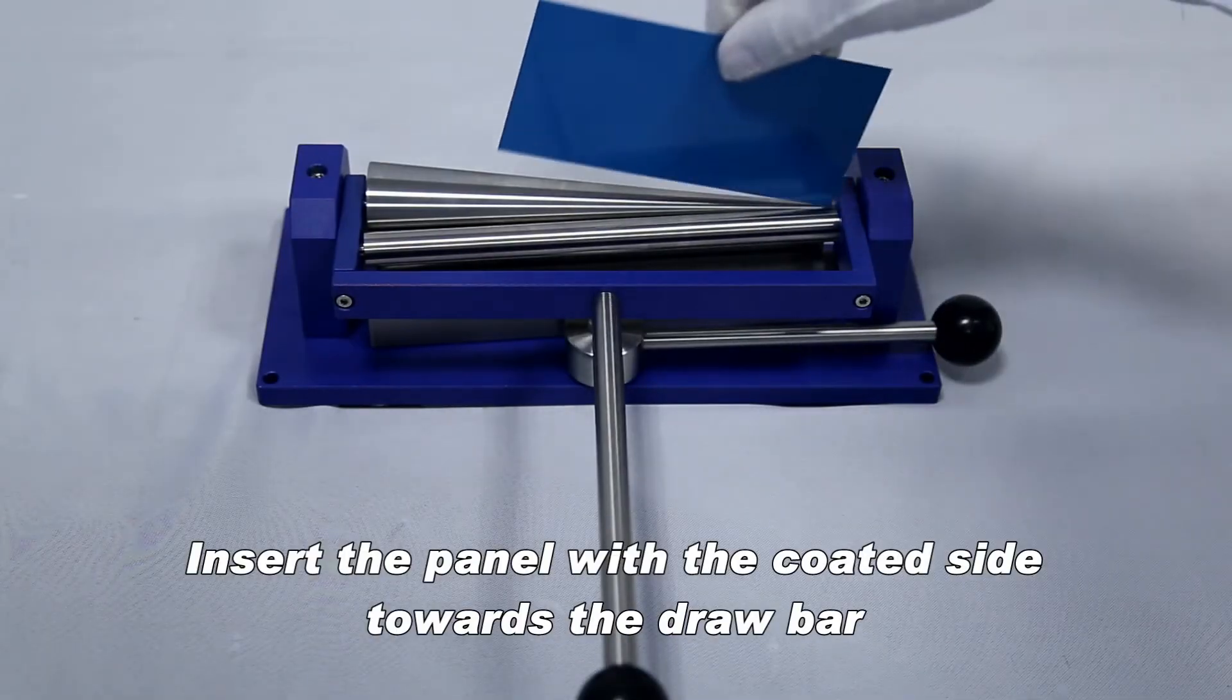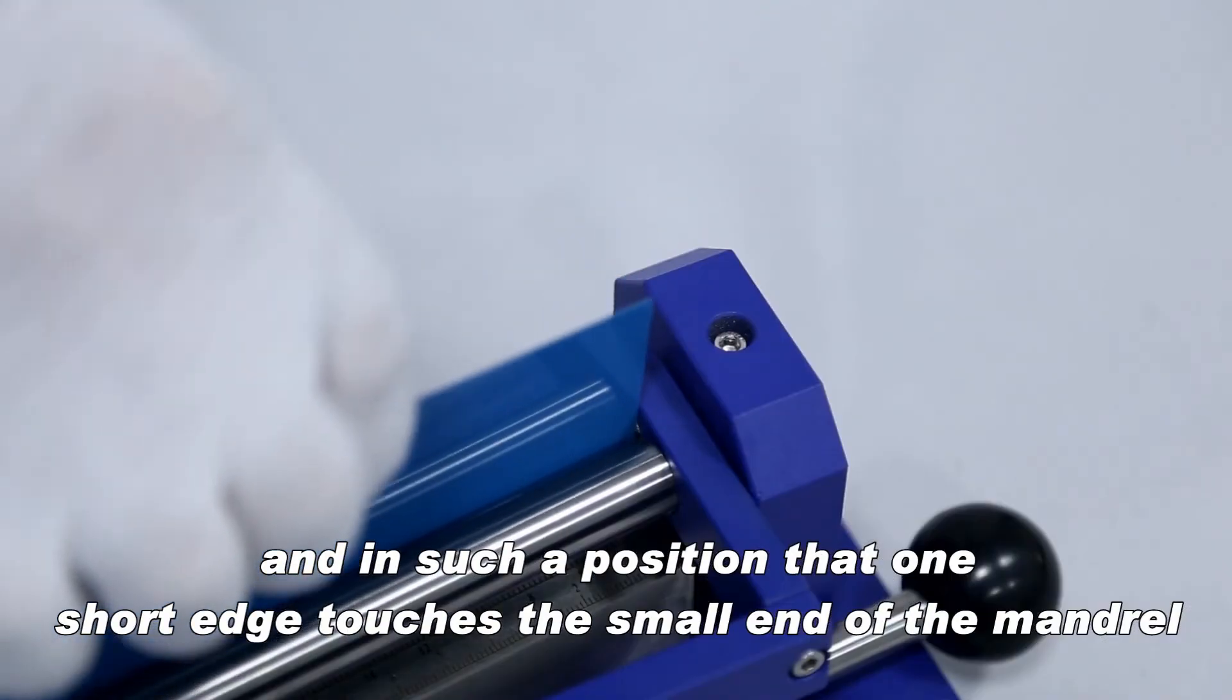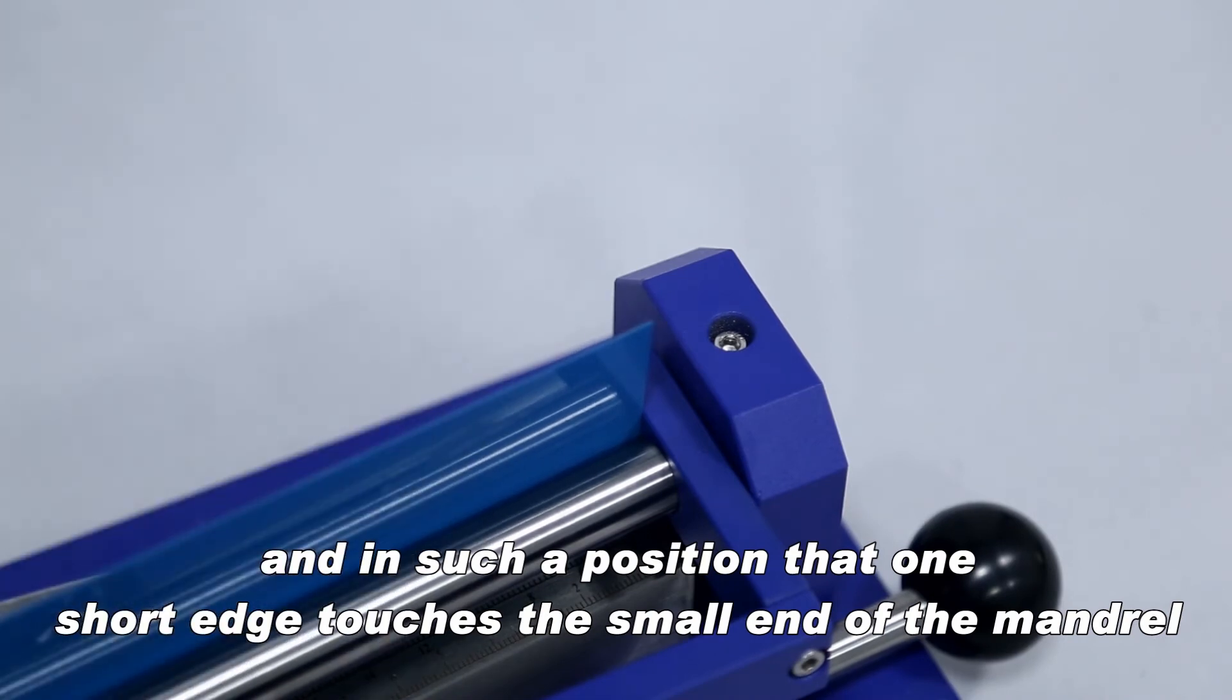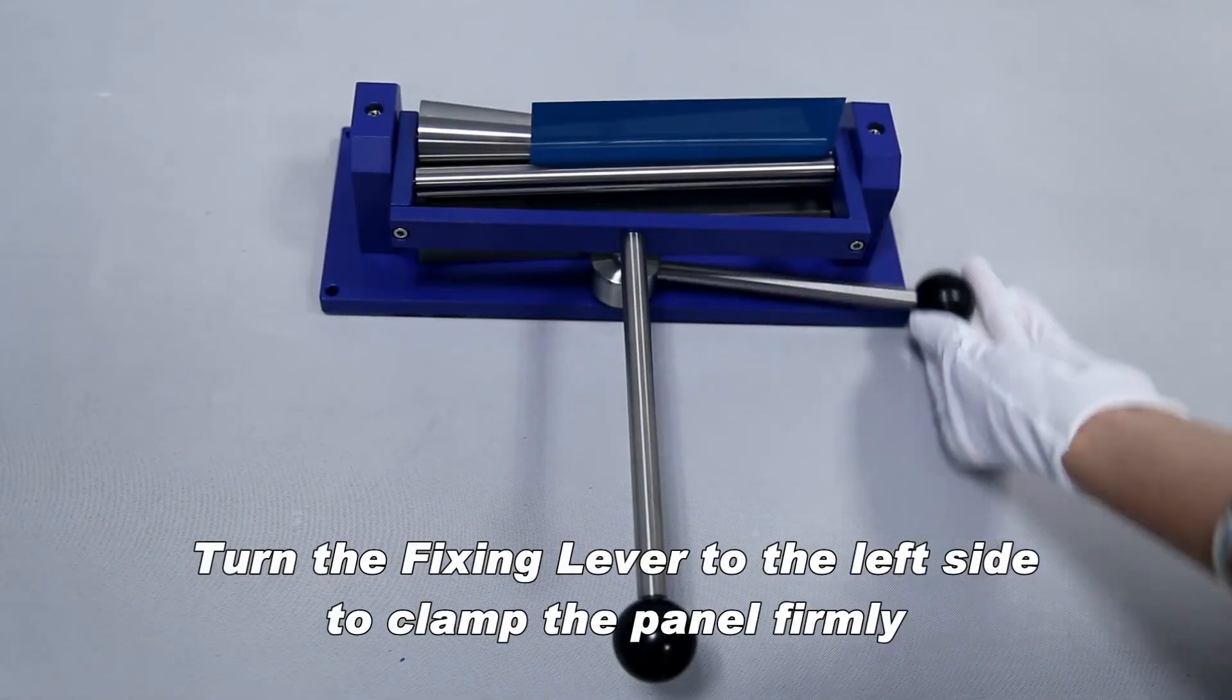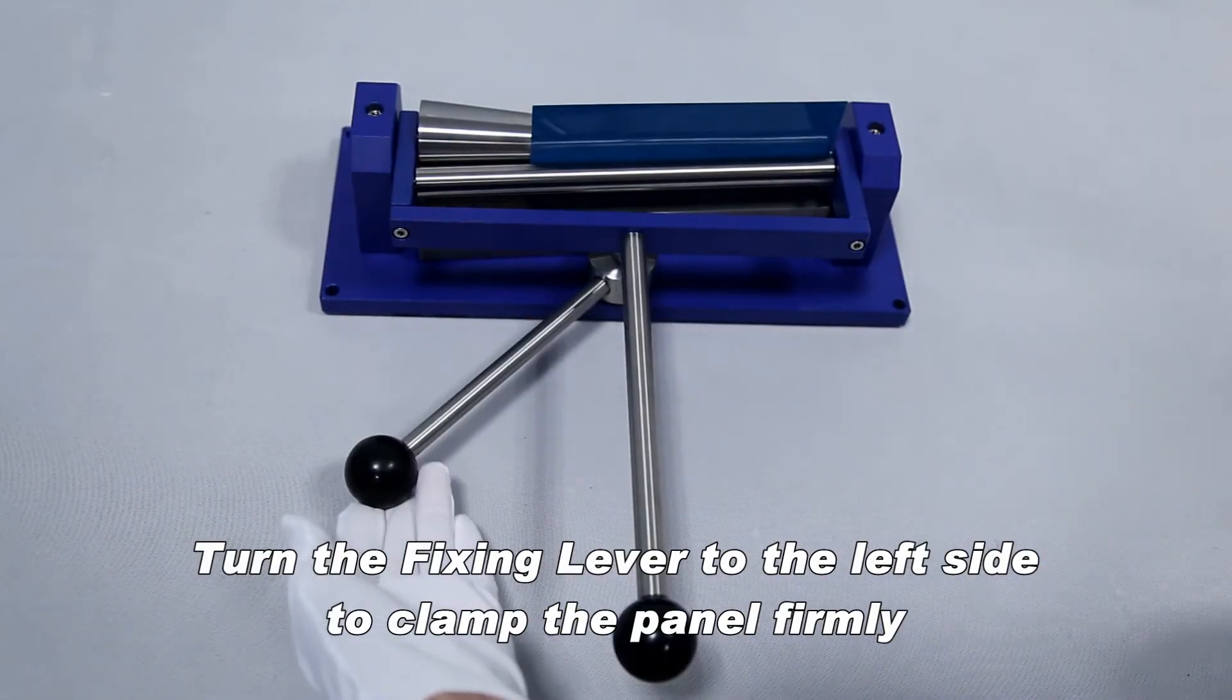Insert the panel with the coated side towards the drawbar and in such a position that one short edge touches the small end of the mandrel. Turn the fixing lever to the left side to clamp the panel firmly.